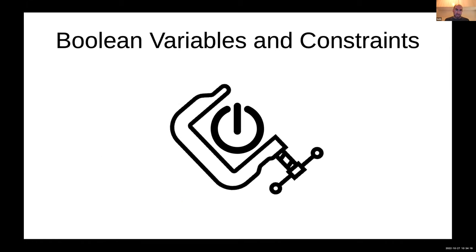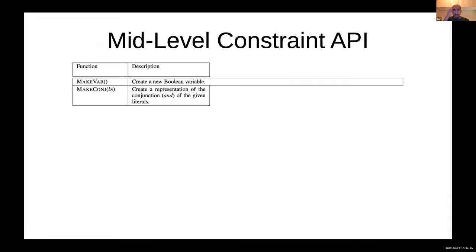The whole system is built on top of simple Boolean variables and essentially two kinds of constraints. This is actually all implemented in Python. The API is Python functions that you can call. You can make Boolean variables and represent for whatever solver you're using the and or conjunction of some things.